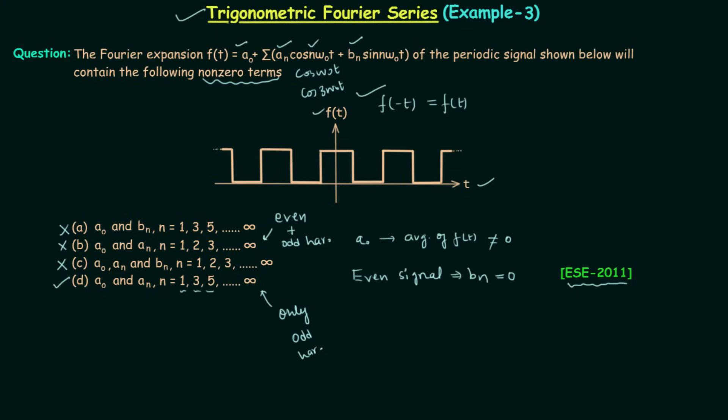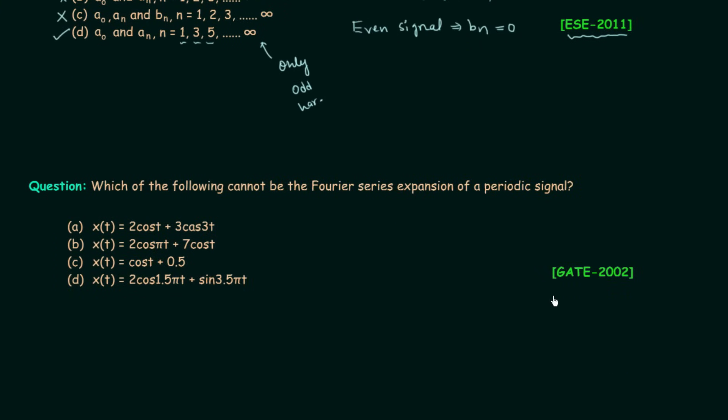I have taken the homework problem from GATE 2002 electronics and communication paper. The question is asking which of the following cannot be the Fourier series expansion of a periodic signal. There are four options and once you have your answer post it in comment section and if possible also explain the reason behind your answer. So this is all for this lecture see you in the next one.